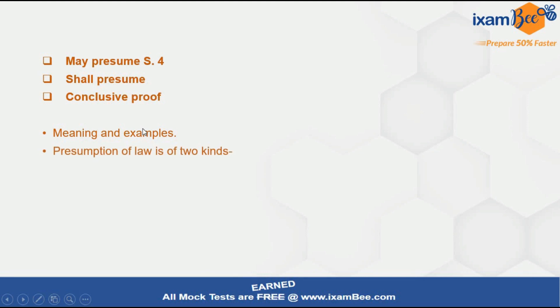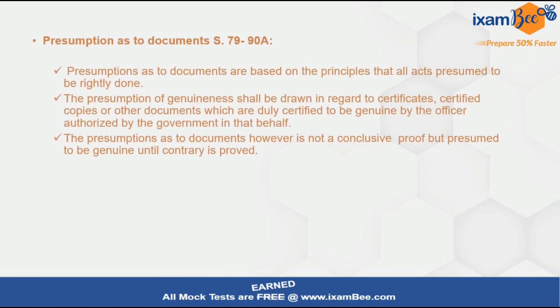Including meaning and examples under each subheading, you can then move to the next category: rebuttable and irrebuttable presumptions. Rebuttable legal presumption is what we discussed under 'shall presume,' and irrebuttable presumption is what we discussed under the heading of conclusive proof.